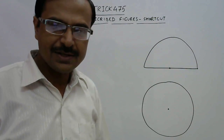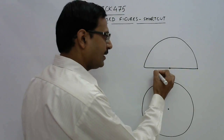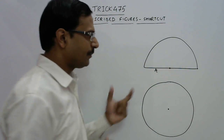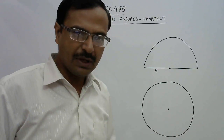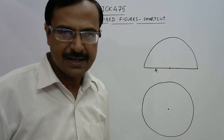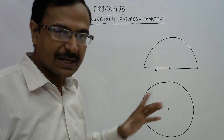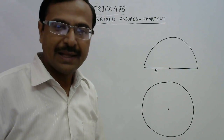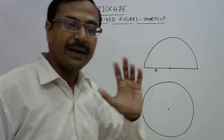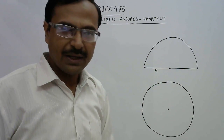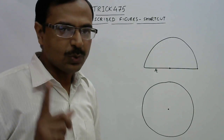In the case of a semicircle, we have only one dimension — that is the radius of the semicircle. Similarly, in the case of a circle, we also have only one dimension — its radius. So if the radius is known, we can find the area of the inscribed figure directly without using any lengthy methods.